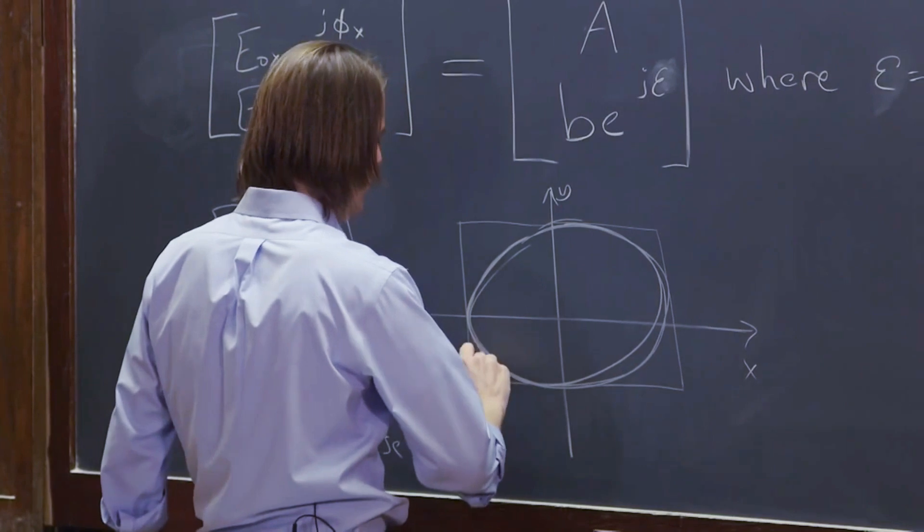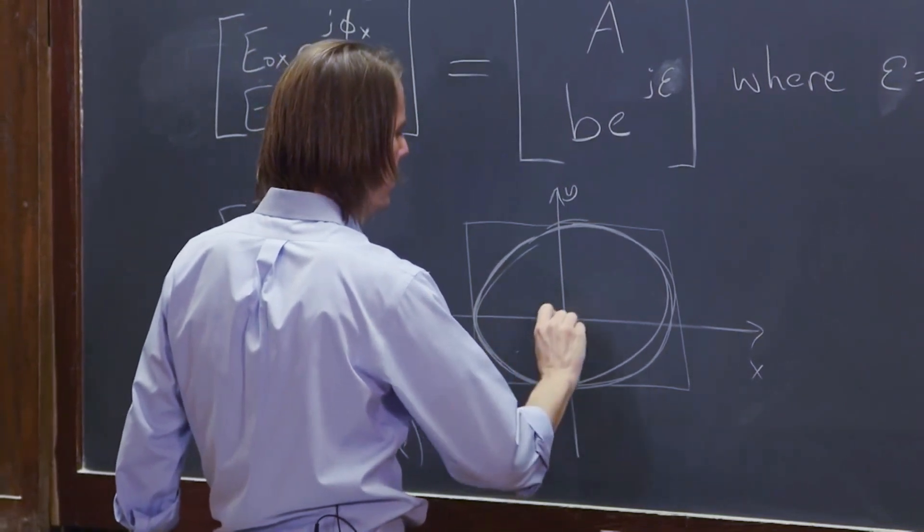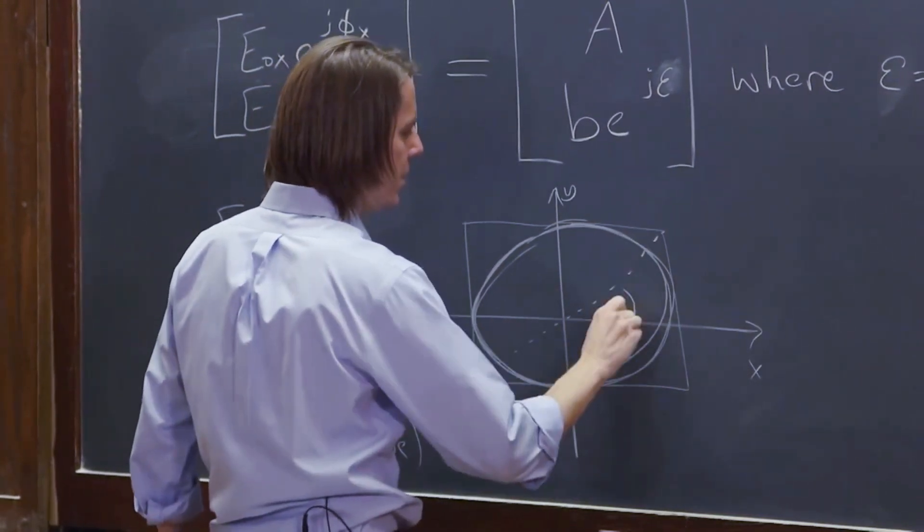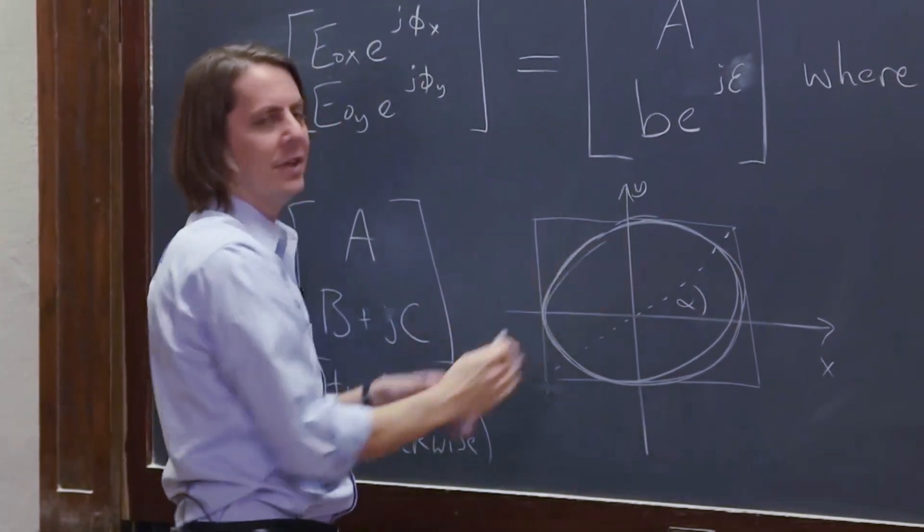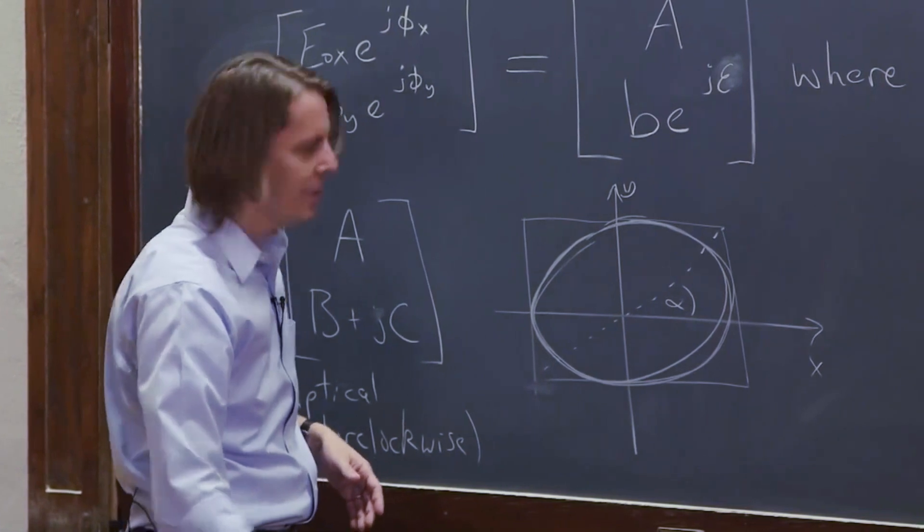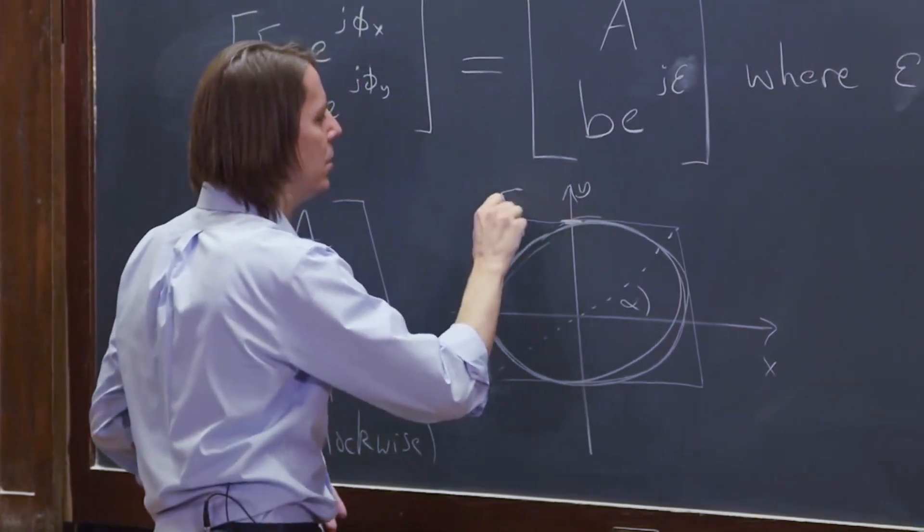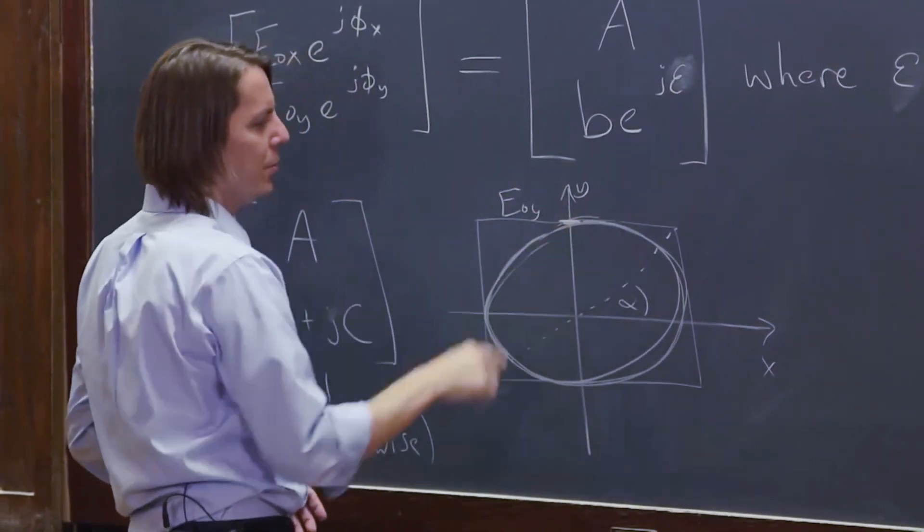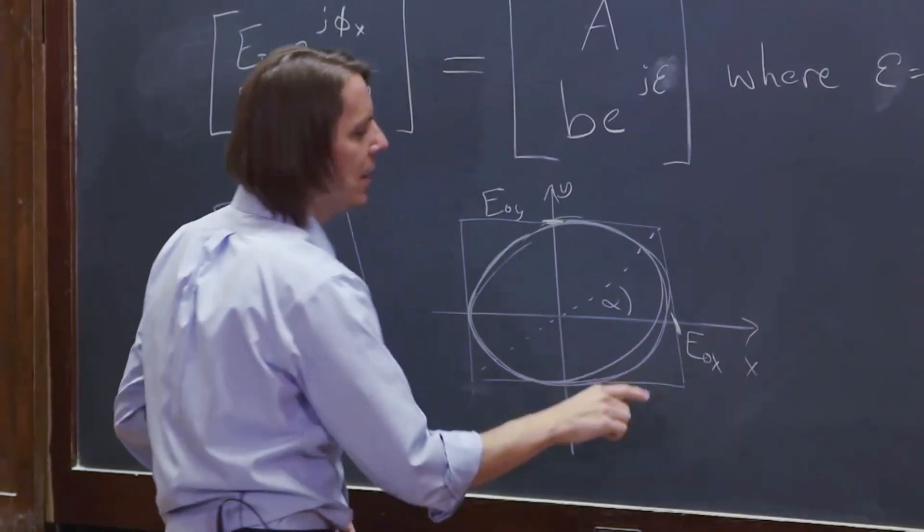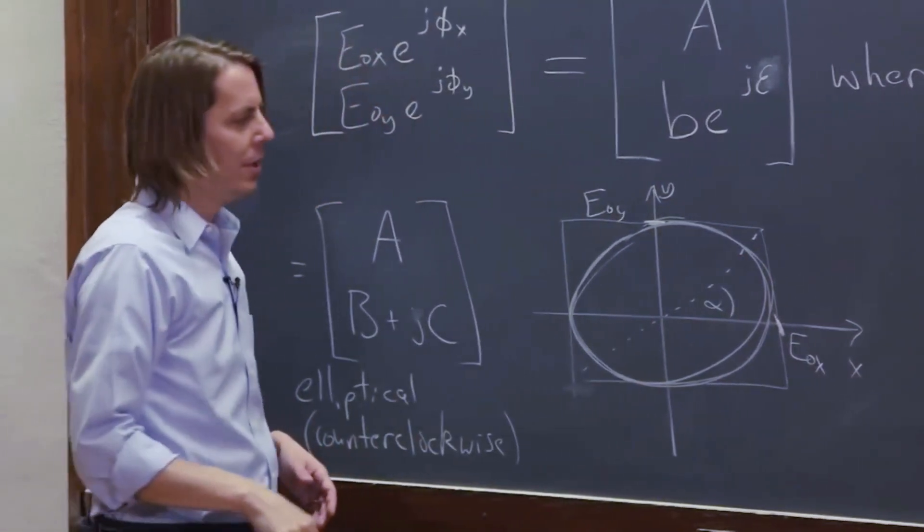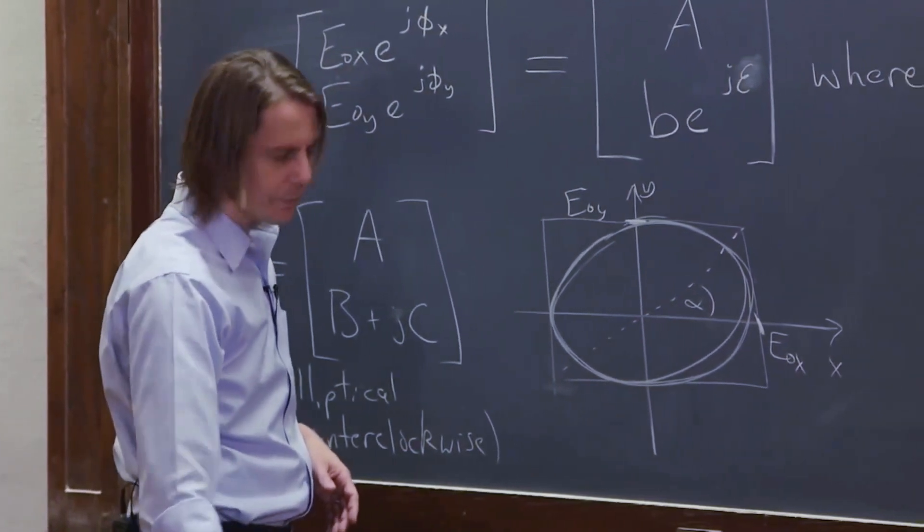Where this ellipse is at some angle alpha. Its long axis is elevated off the x-axis at some angle alpha. It hits some maximum value E not Y which is supposed to hit over here, and it hits some maximum value E not X which happens also a little bit off the axis.